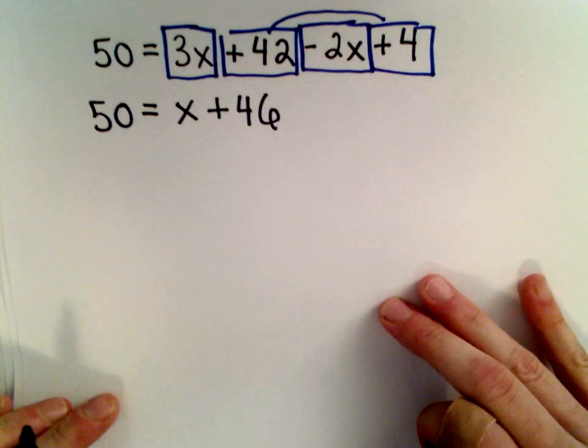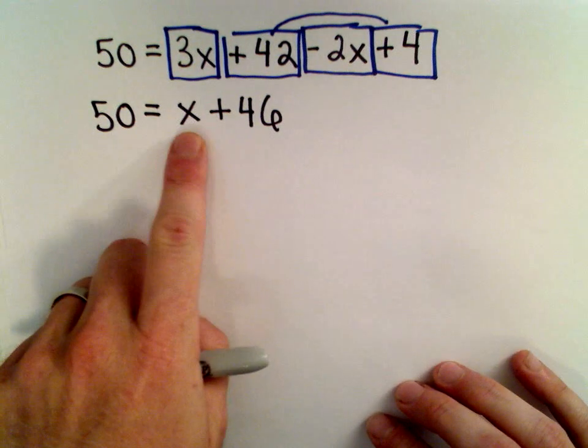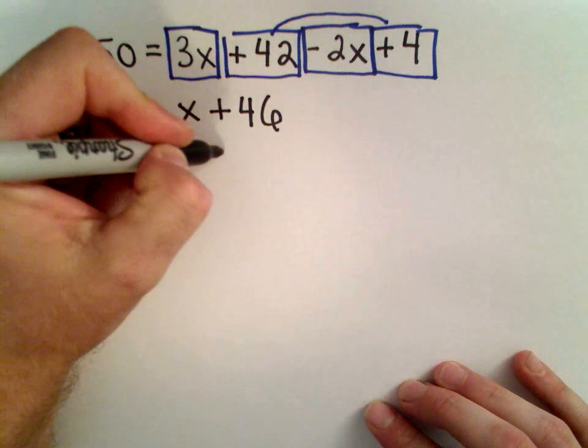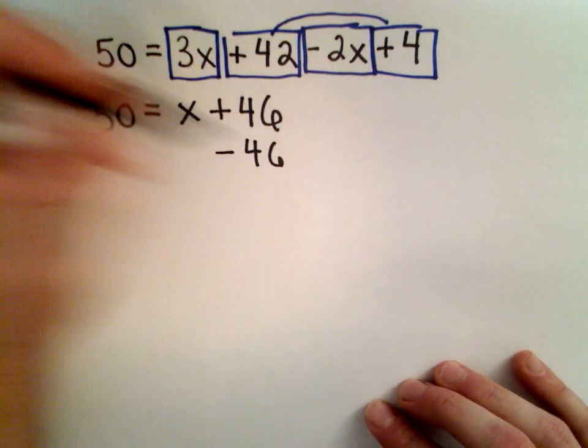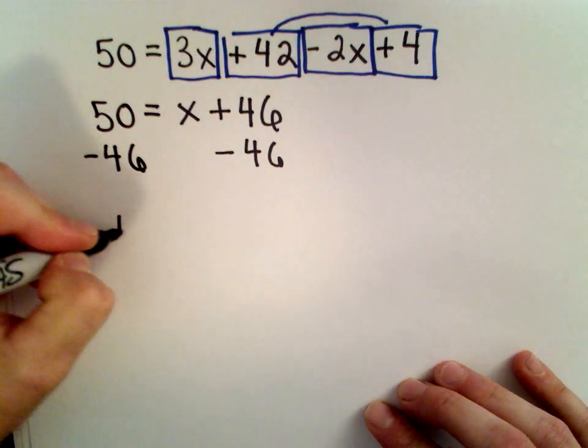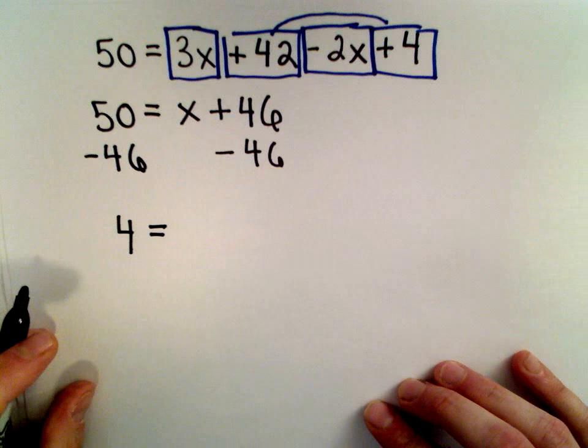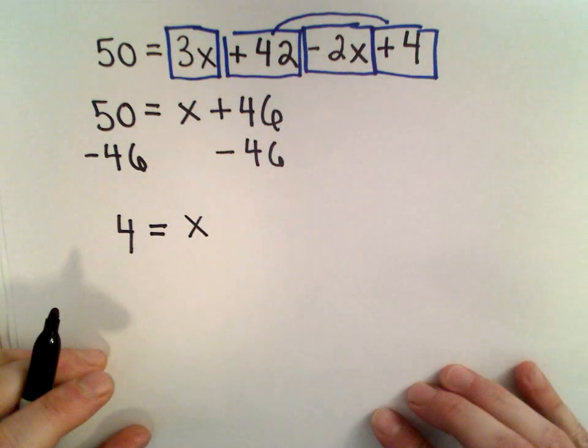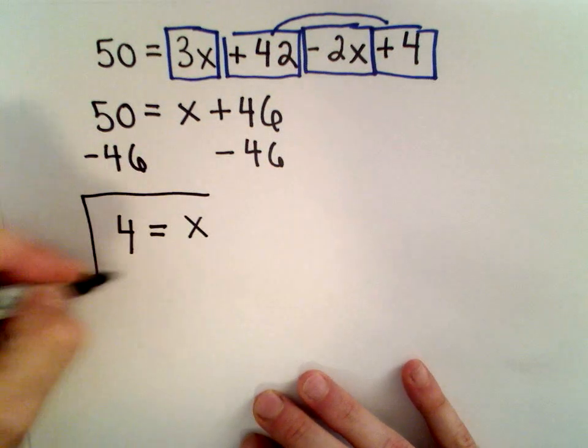And now we're almost there. We've got x almost by itself. I want to get it all by itself. Well, since I'm adding 46, I'm going to subtract 46 from both sides. 50 minus 46, that's going to leave us with 4. And on the right side, we're just simply left with our value of positive x. And that is now our solution.